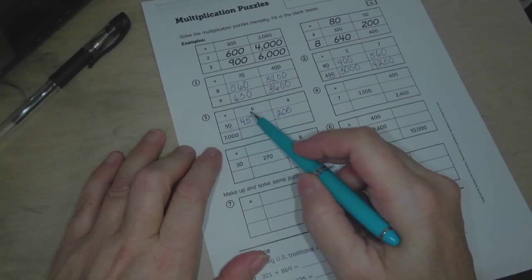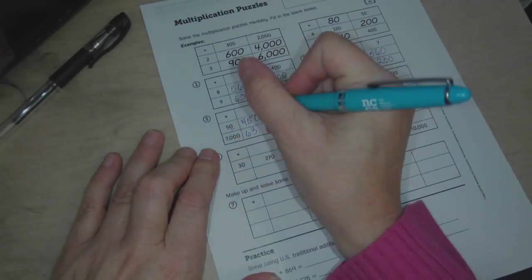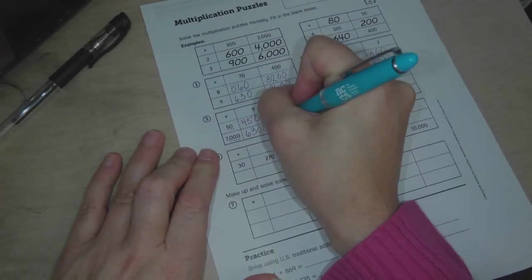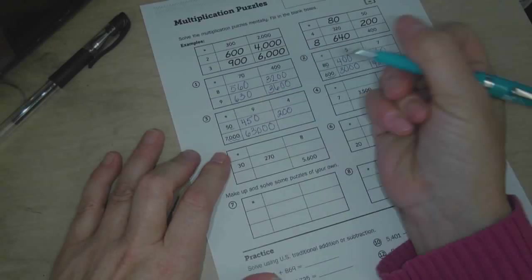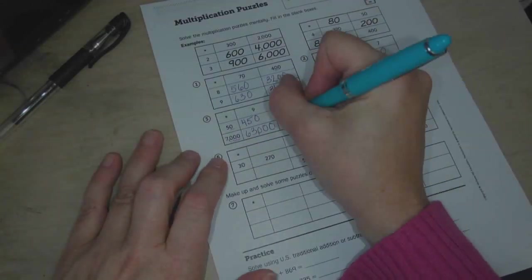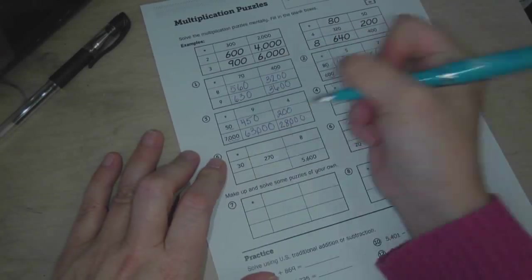7,000 times 9. 7 times 9 is 63, and then 1, 2, 3 zeros, making it 63,000. 7,000 times 4. 7 times 4 is 28, and then 3 zeros, making it 28,000.